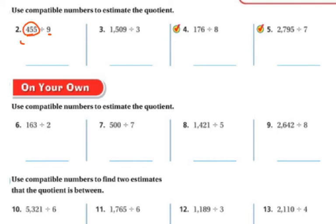So if I use 45 and 9 as my compatible number, so if I change this to be 450 divided by 9, it is easy for me to compute. 9 goes into 45, 5 times. And then again, I have my one zero there because it's really 9 goes into 45 tens. So it's going to be 50 because 5 tens is 50.